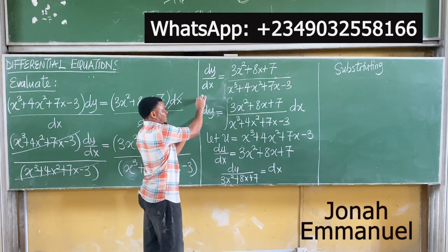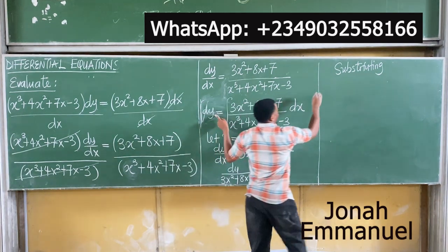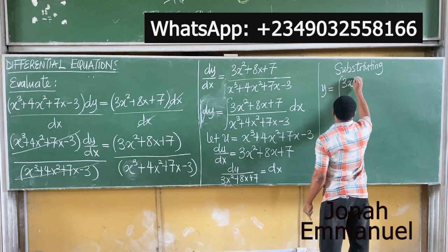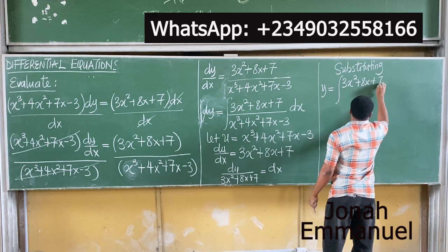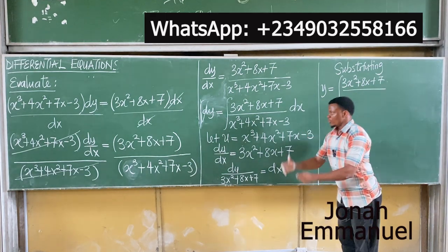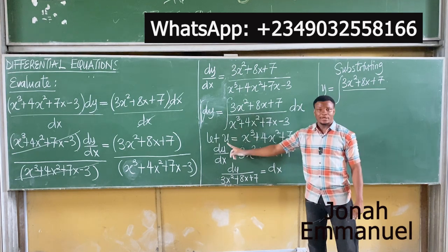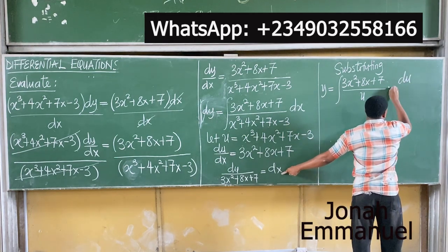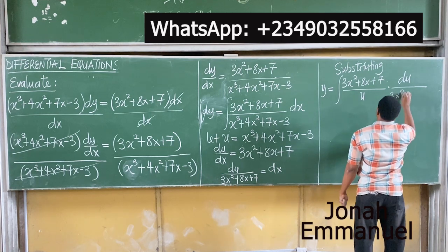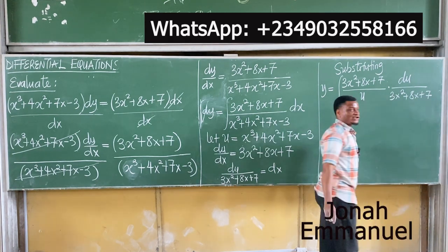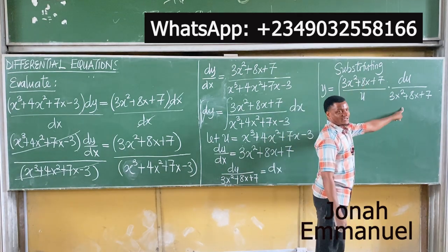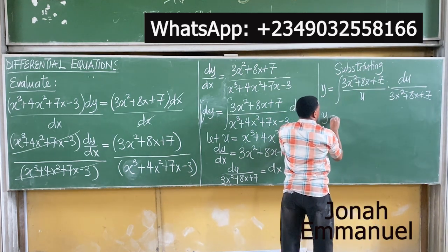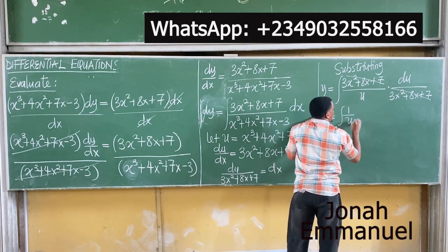So y equals the integral of this. Since we called 1 minus... the denominator u, substituting: y is equal to the integral of 3x squared plus 8x plus 7, all over u, dot dx. And dx equals du over 3x squared plus 8x plus 7. We can cancel the 3x squared plus 8x plus 7 terms.